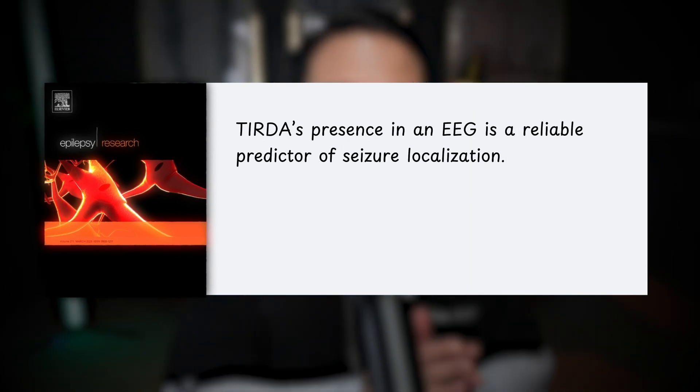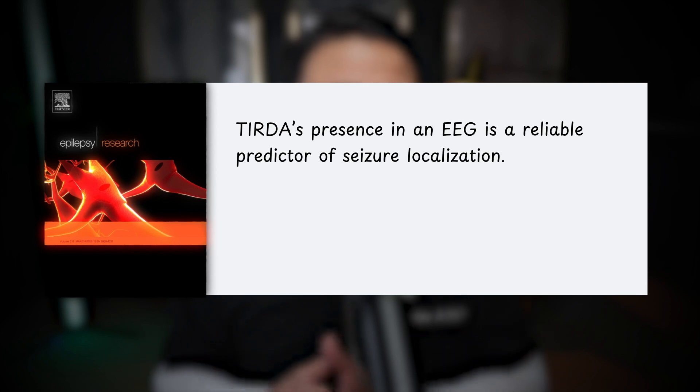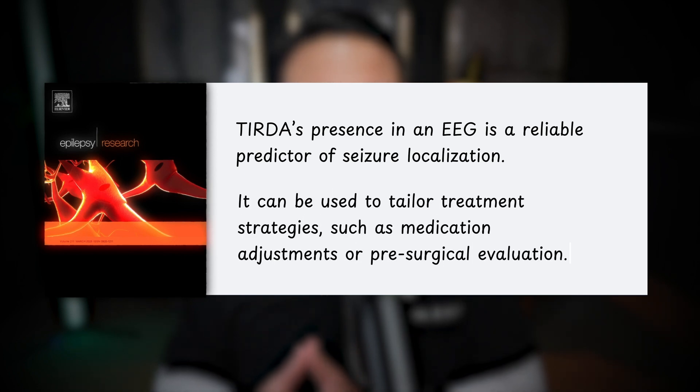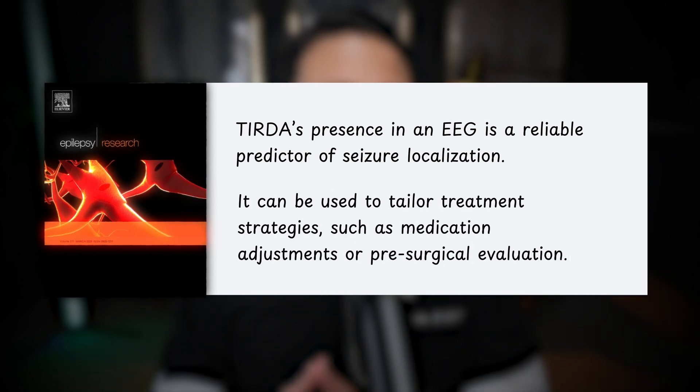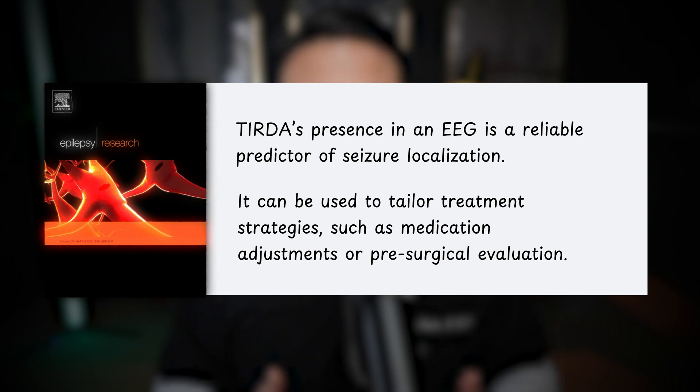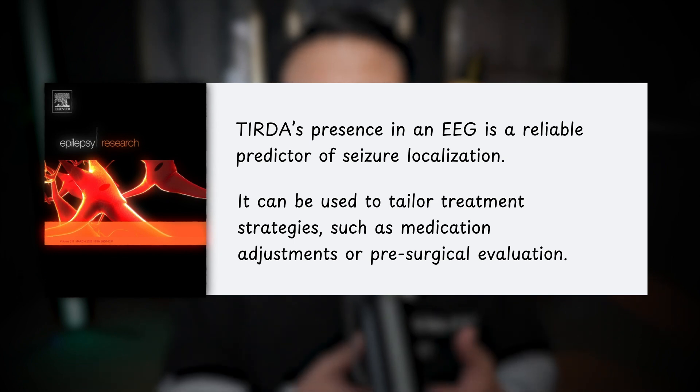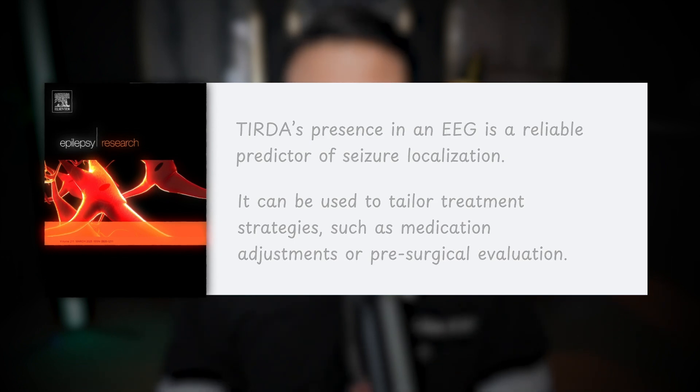Studies and epilepsy research highlight that TIRDA's presence in an EEG is a reliable predictor of seizure localization and can be used to tailor treatment strategies such as medication adjustments or pre-surgical evaluation. Recognizing patterns like TIRDA is crucial for identifying and localizing epilepsy, especially in patients with temporal lobe involvement. Thanks for watching, and I'll see you next week for another Two Minute Tuesday video.